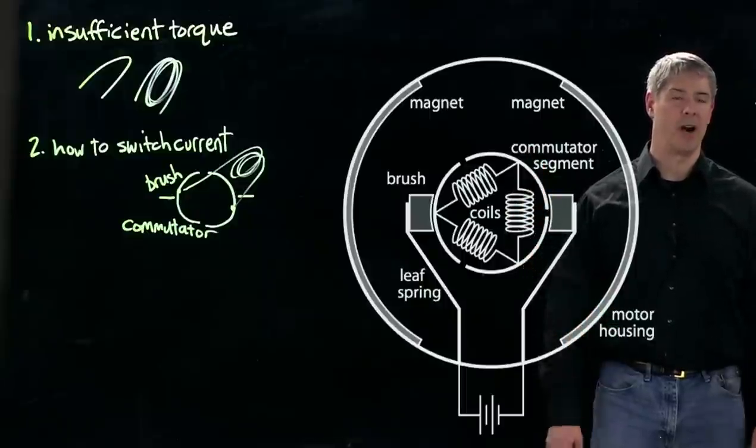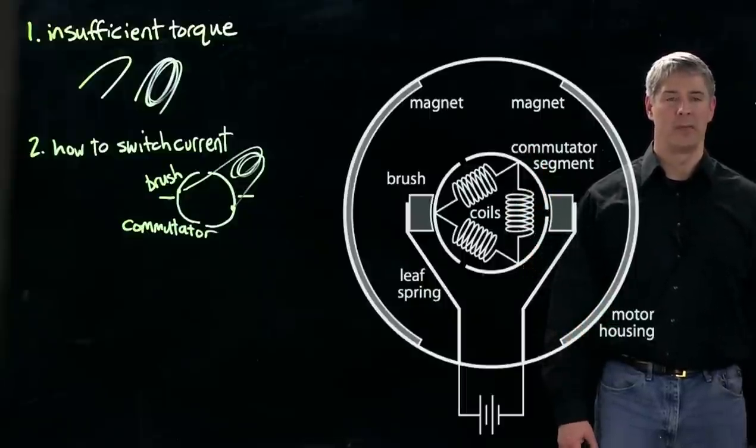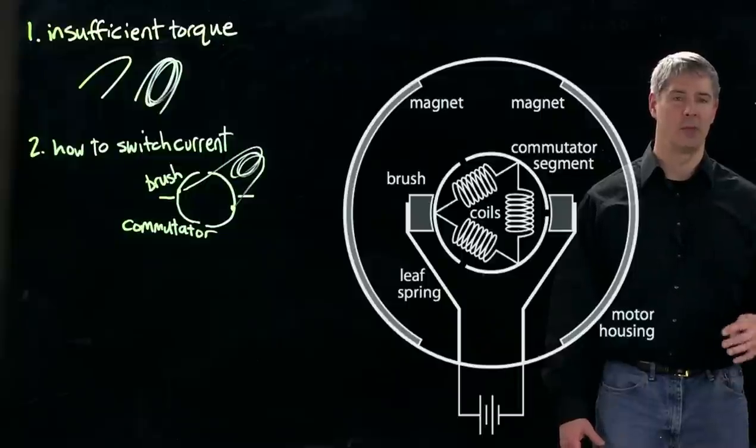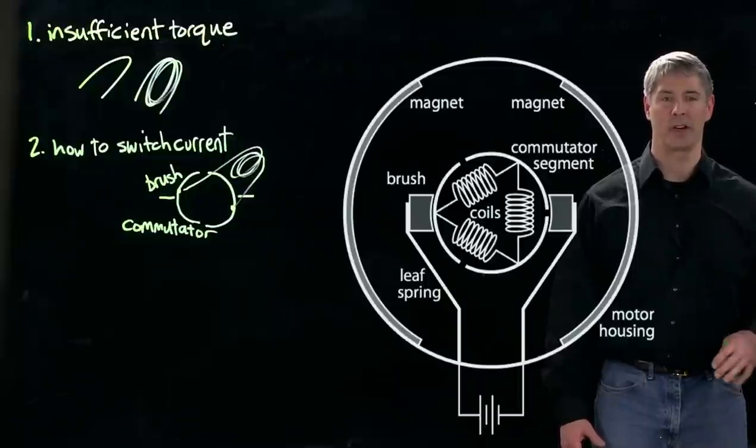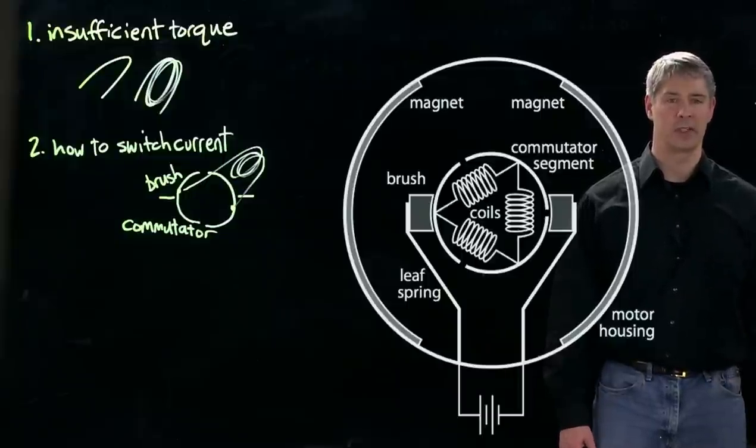That's a simple model of how a motor works. Most motors have more commutator segments and more brushes, and thereby get a more constant torque as a function of the angle.